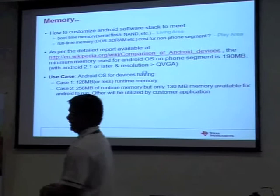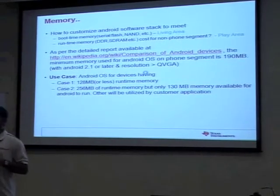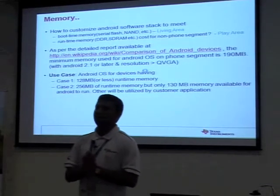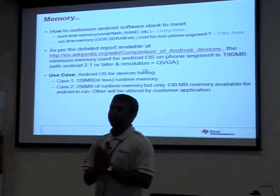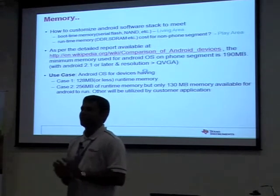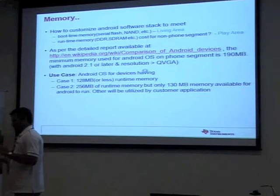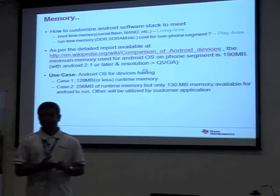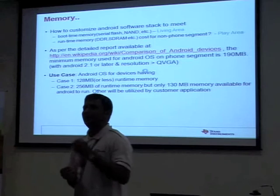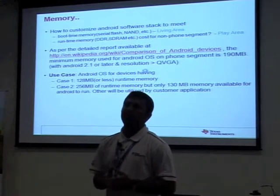All Android phones that exist in the world today require a minimum of 190 MB of memory with resolution higher than QVGA and Android version 2.1 or later — so 190 MB is the minimum memory at present. We have two use cases we concentrated on: one is to boot Android with 120 MB of memory. The second use case is I have 256 MB of memory, but I want to use around 130 MB for my own applications — meaning Android should boot with the least memory requirements.